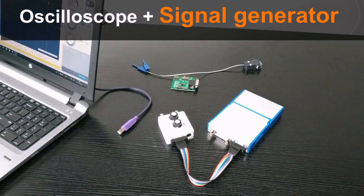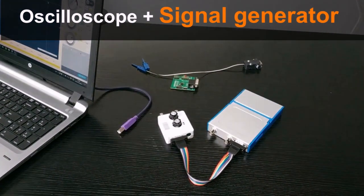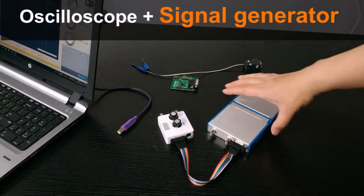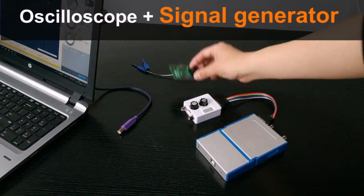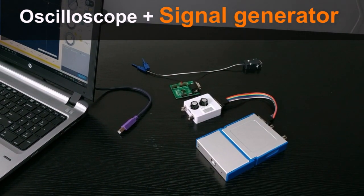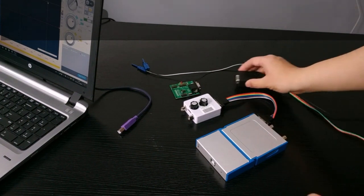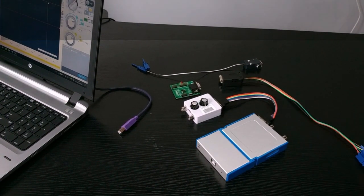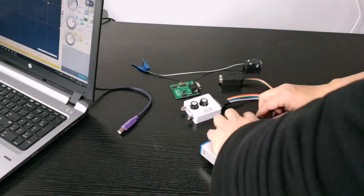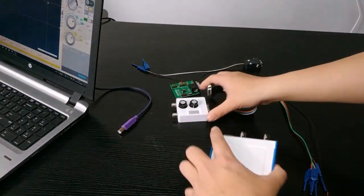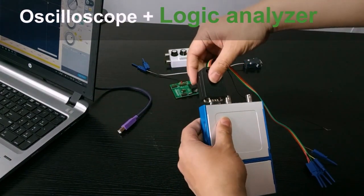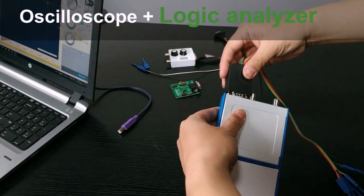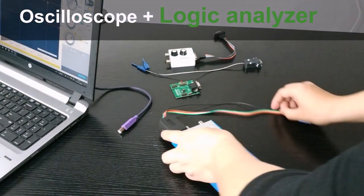So this is the logic analyzer module. This module is called AL-01 and it provides 4 input digital channels. Together with these channels we have also a reference signal that is generated by the oscilloscope. This signal is a square wave with frequency 1 kHz and we can use this to test the input of the logic analyzer.